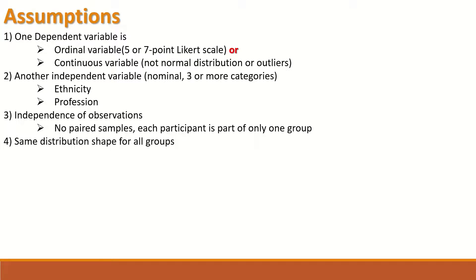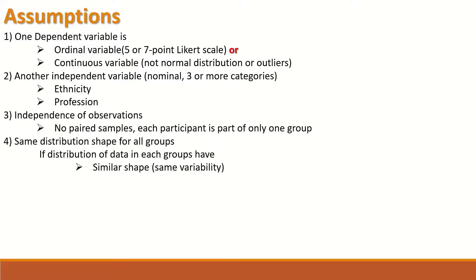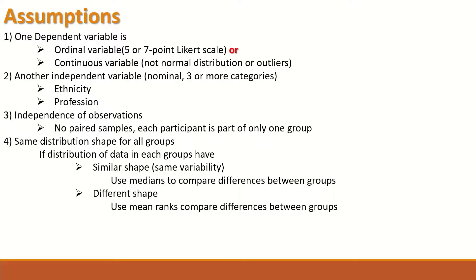The fourth assumption is that the distribution shape for all groups needs to be the same. If the distribution of the data in each group has a similar shape and similar variability, use the median to compare differences between groups. If the shapes differ, use mean ranks to compare differences between groups. The way to examine the data shape is to use histograms and box plots, which give you an idea of the distribution of data within each of the groups.